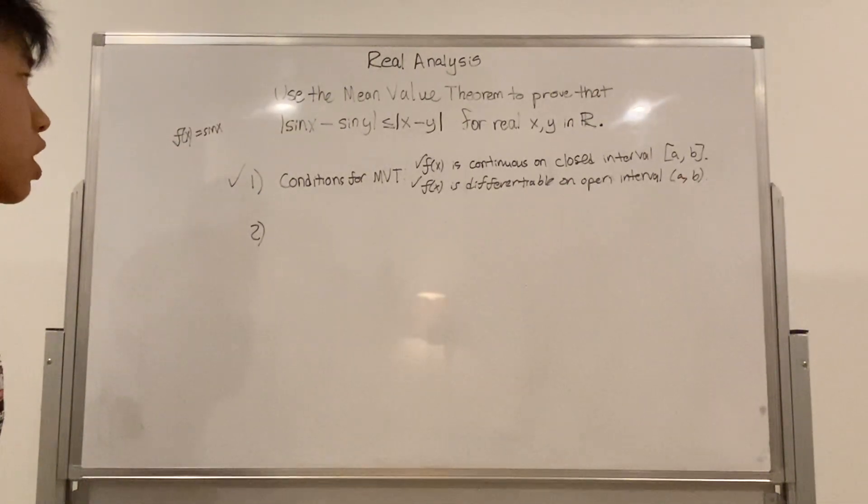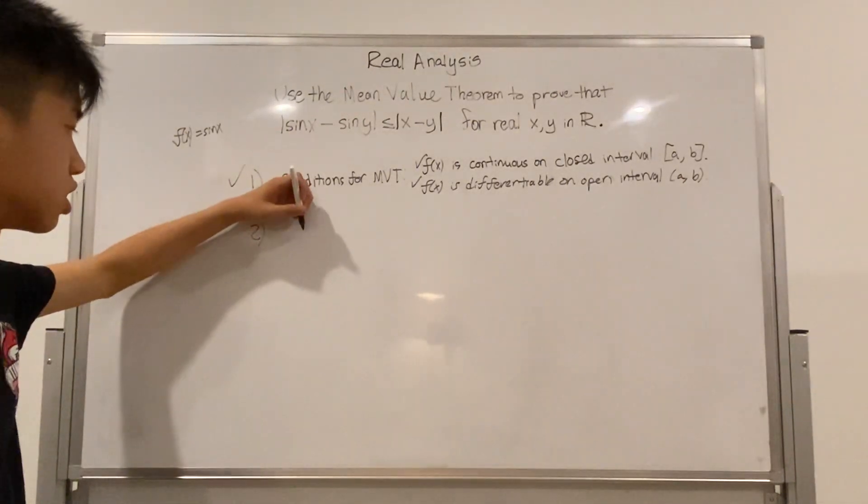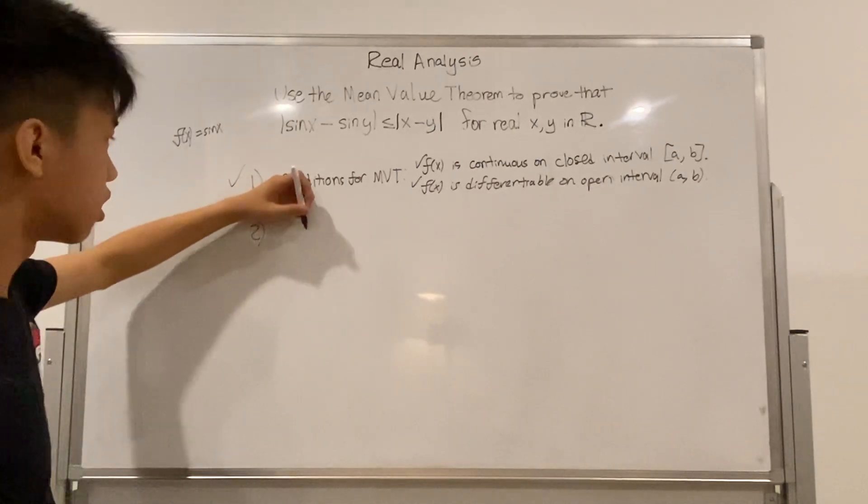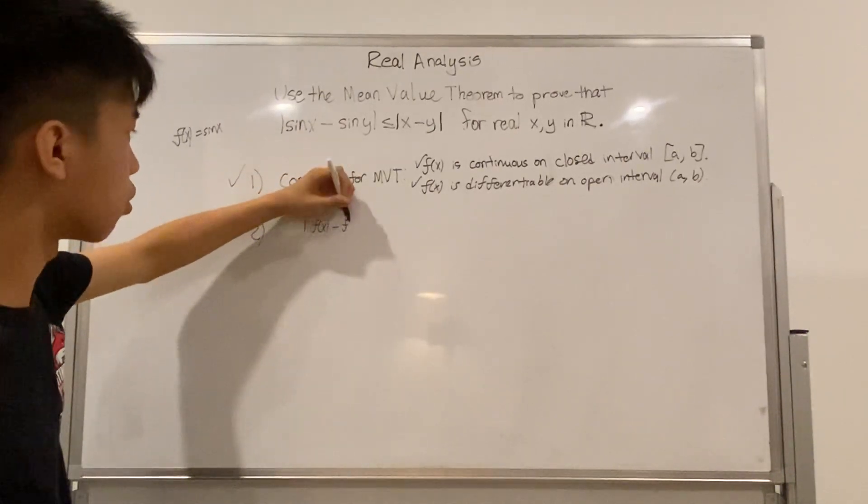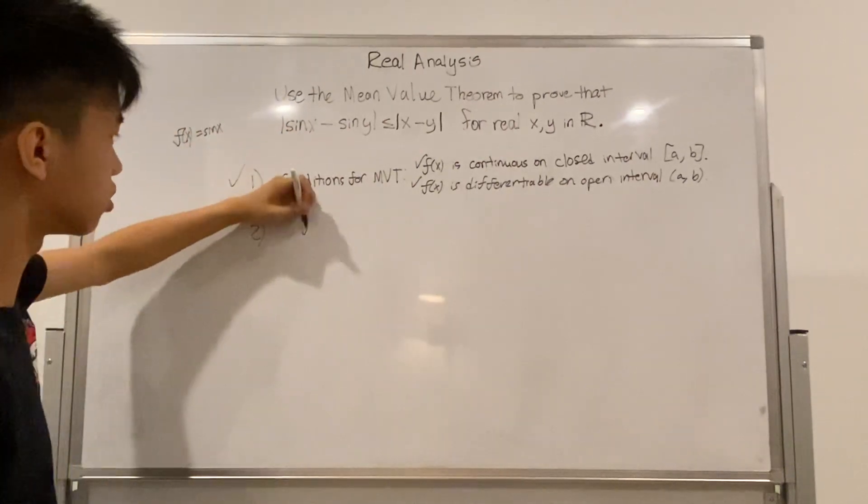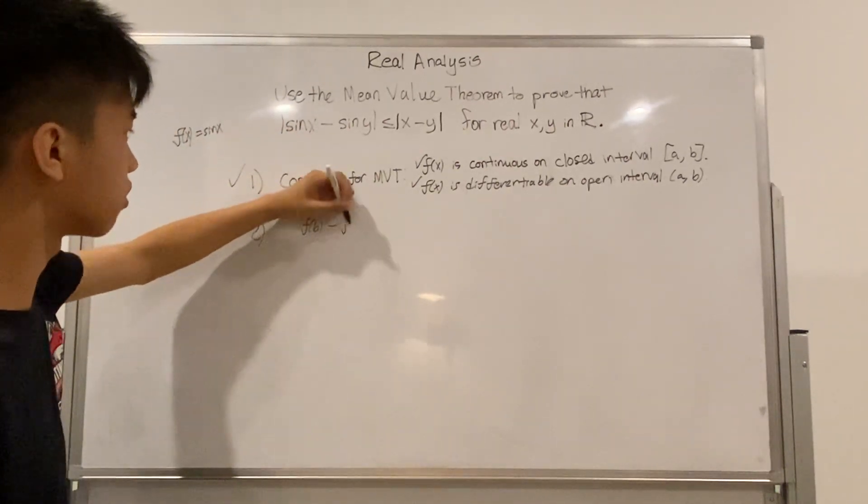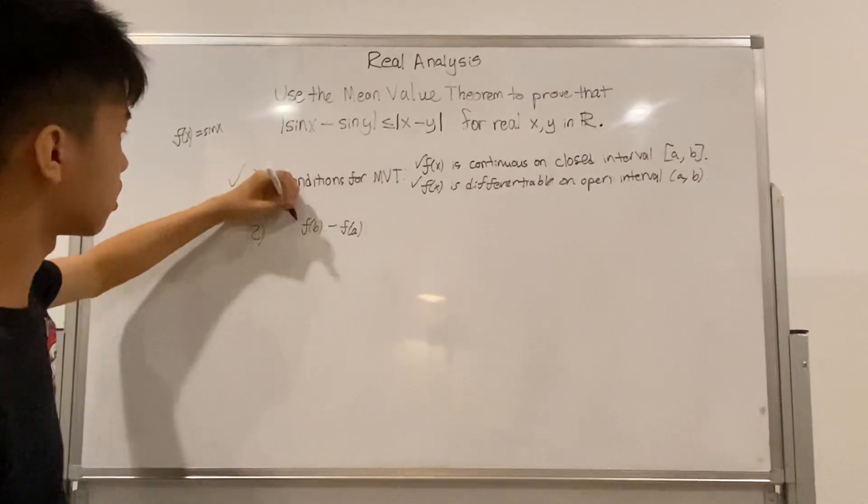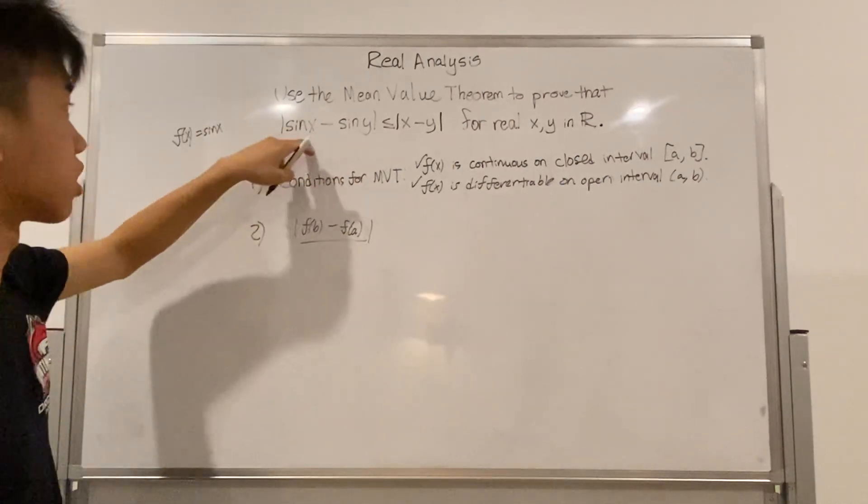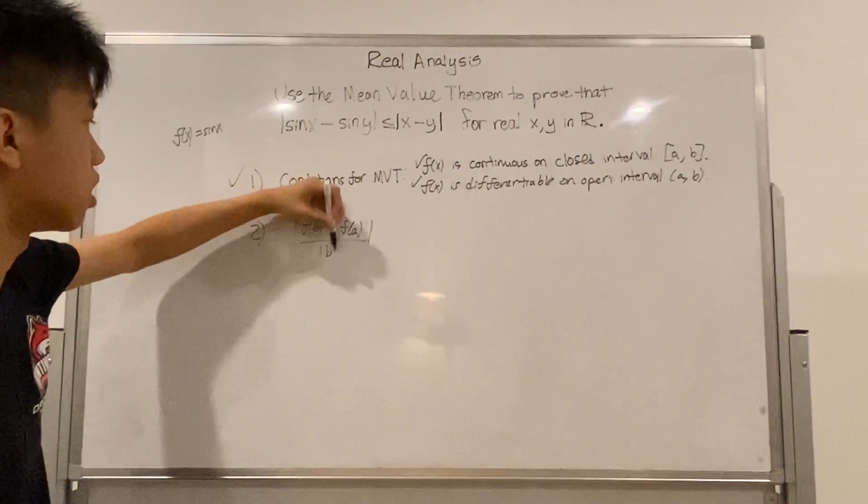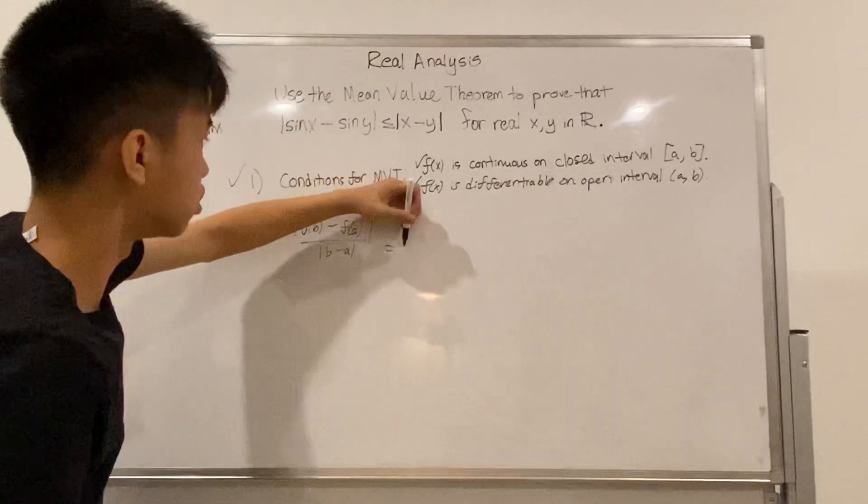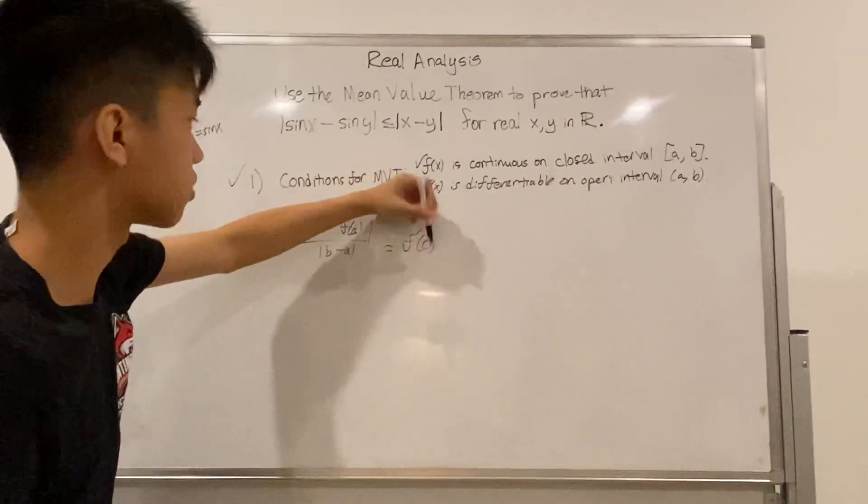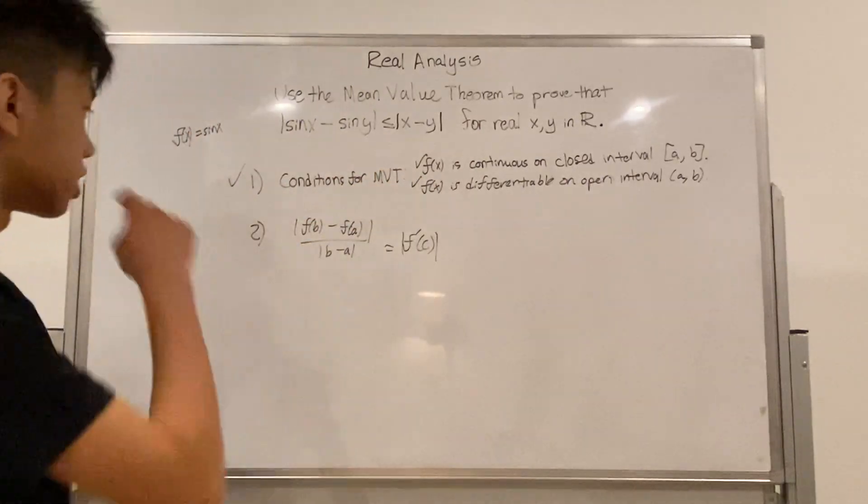So now let's get to what the mean value theorem states. The mean value theorem states that if you have absolute value of f of b minus f of a over absolute value b minus a, put an absolute value there because it's needed, is equal to f prime of c.